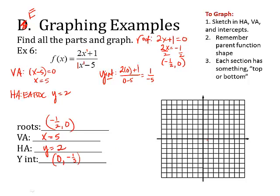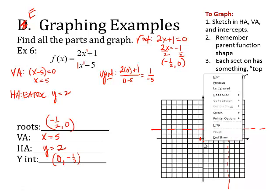Now, I'm going to plot these points and see what shapes I have. Negative 1/2, 0 is right here. x equals 5. 3, 4, 5. Vertical line right here. Y equals 2. So, my horizontal is up here. And, y intercept is at 0 and negative 1/5. So, it's just below the origin.